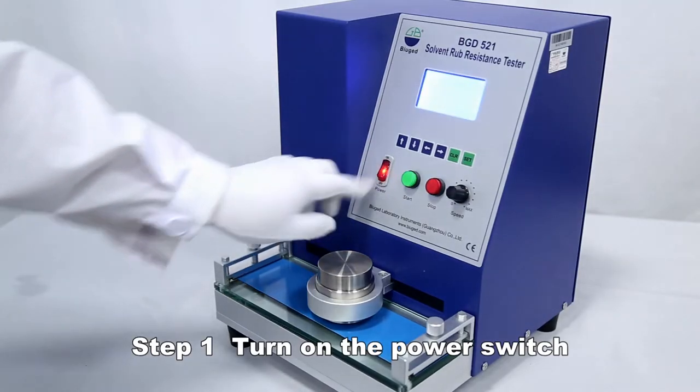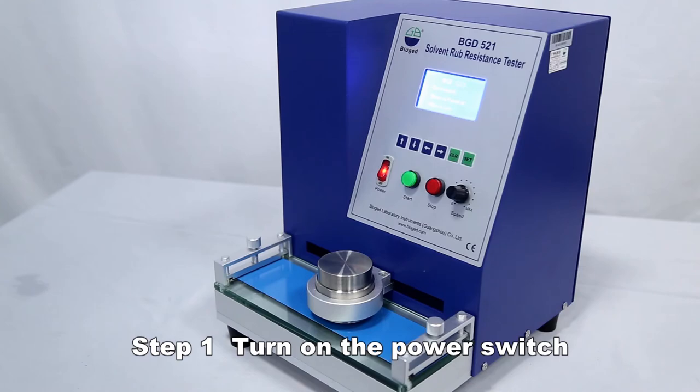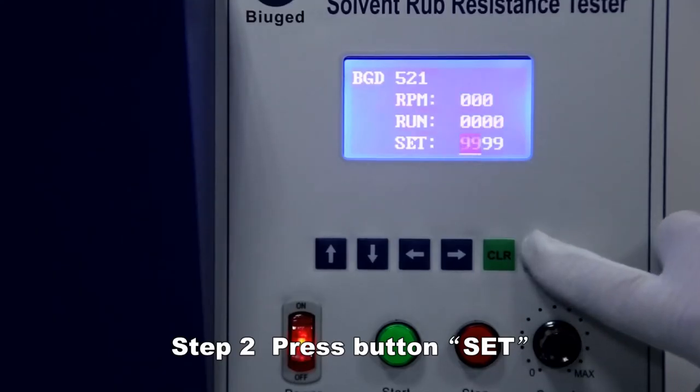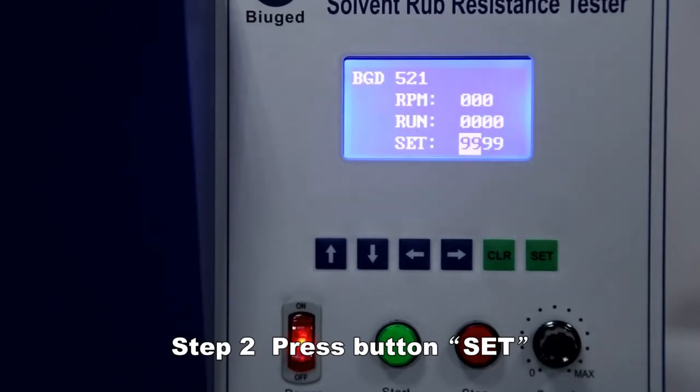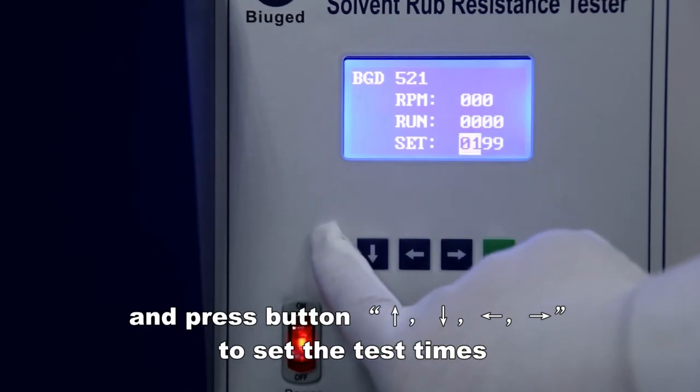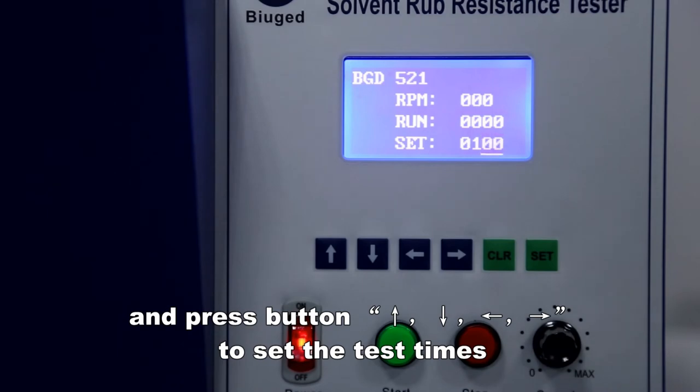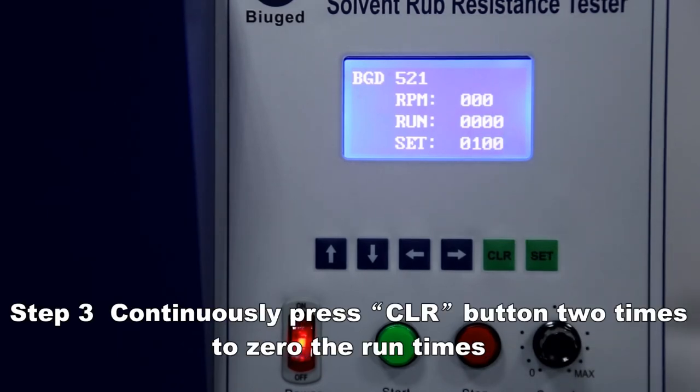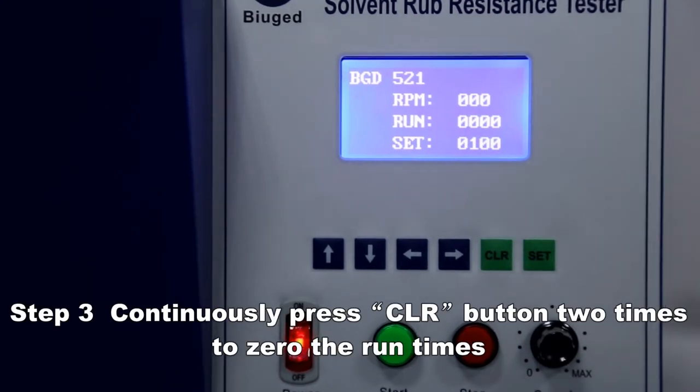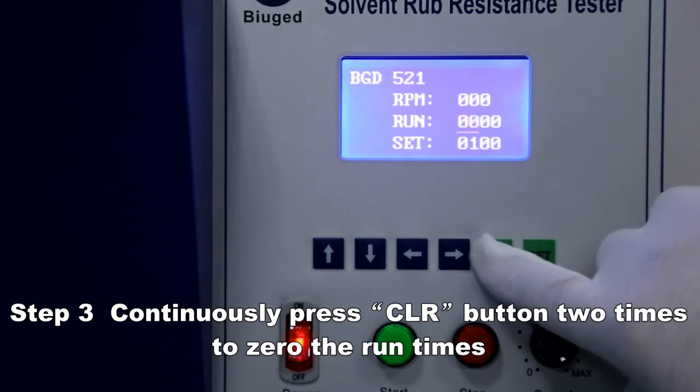Turn on the power switch. Press button SET and press button to set the test times. Continuously press CLR button two times to zero the run times.